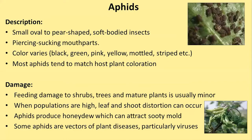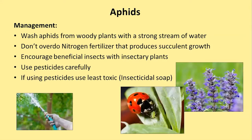Aphids produce honeydew, which attracts sooty mold. Some aphids are also vectors of other diseases, particularly viruses, so it's good to get rid of them. You can wash aphids off woody plants with a strong stream of water, getting underneath the leaves. Don't overdo nitrogen fertilizer—aphids love the fresh, soft, succulent growth it produces. Try to encourage beneficial insects with insectary plants. If you use a pesticide, use the least toxic option such as insecticidal soap, because pesticides kill beneficial bugs too.